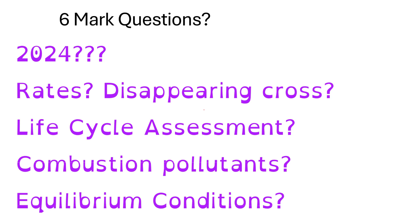So what does that mean for 2024? It's hard to anticipate because the pattern is somewhat inconsistent, but a rates of reaction method seems timely — there hasn't been one since 2018. Alternatively, a life cycle assessment is plausible since it wasn't on last year's paper, and neither was a pollutants question at all. A fourth hunch would be equilibrium conditions, as that comes up all the time whether as a six-marker or smaller question, so that revision will not go to waste.